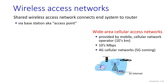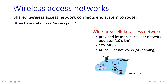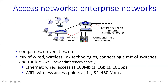One more type is the wide area cellular access network. It is going to be provided by your mobile or any of your cellular networks, which will cover up to 10 kilometers. In your WLAN, the connection range will be only around 100 feet, but here it will be up to 10 kilometers. It is going to have 10 Mbps of data and can support 4G cellular networks, and now 5G is also available.